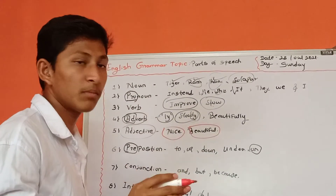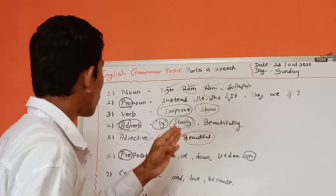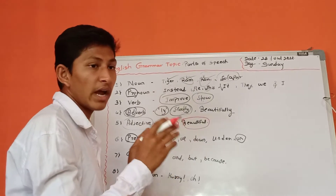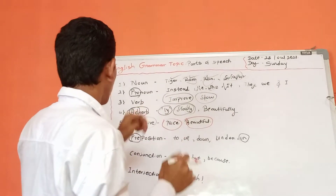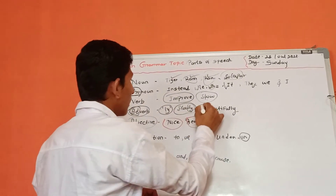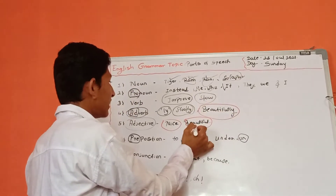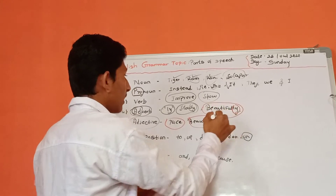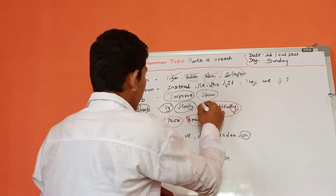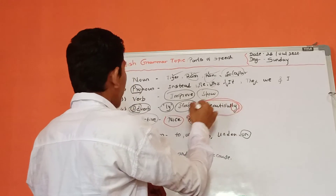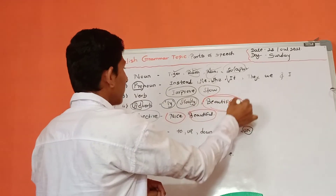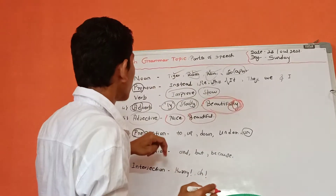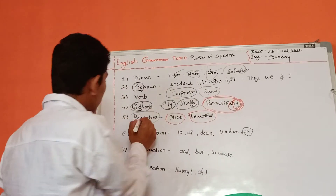Adverb is nothing but which tells more about the Verb and more about the Adjectives — that we call Adverb. Here the word 'Beautiful' is an Adjective, but we added '-ly,' and so 'Beautiful' turned into an Adverb because it gets '-ly.' I will tell with sentences in another video, so please don't skip the video.